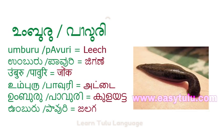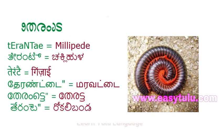Umburu or Pauori means Leech. Therant means Millipede.